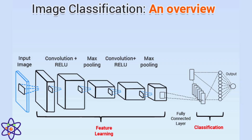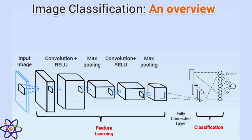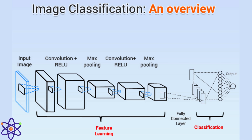Image classification involves assigning a label or category to an entire image based on its content. It is a fundamental task in computer vision, often used for identifying objects or scenes. Image classification is employed in diverse applications, from medical image diagnosis to content-based image retrieval. Deep learning, especially CNNs, has significantly advanced the accuracy of image classification.